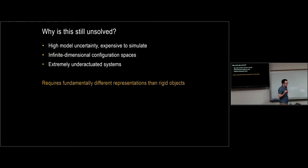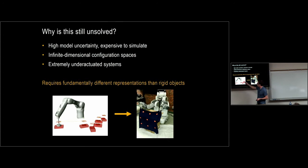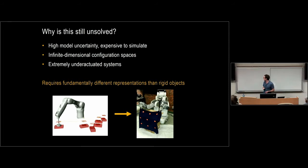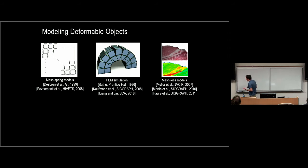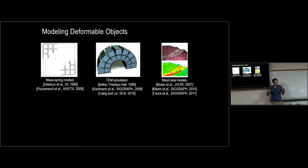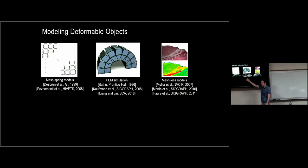I want to argue that we require a fundamentally different representation for planning deformable objects than what we use for rigid objects. We have to move away from the pick-and-place rigid body paradigm. How do people model and simulate deformable objects? There are many methods — mass-spring models, finite element methods, meshless methods — all with great applications in surgical simulation, video games, and movies. But when we look at the robotics problem, we have some issues with what's available.